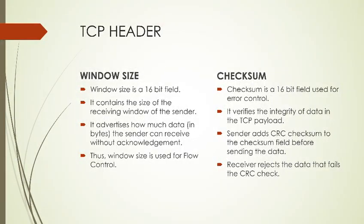Window size is a 16-bit field which contains the size of the receiving window of the sender. It advertises how much data the sender can receive without acknowledgement, and is used for flow control. Checksum is a 16-bit field used for error control — it verifies the integrity of the data in the TCP payload. The sender adds a CRC (Cyclic Redundancy Check) to the checksum field before sending. If the CRC check fails, the receiver rejects the data.